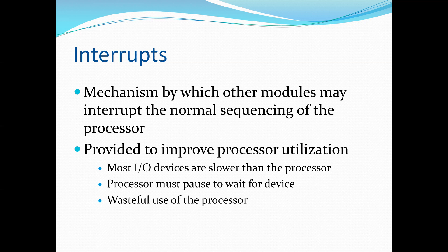For example, most I/O devices are much slower than the processor. Suppose a processor is transferring data to a printer using the instruction cycle. After each write operation, the processor must pause and remain idle until the printer catches up. The length of this pause may be on the order of many thousands or even millions of instruction cycles.